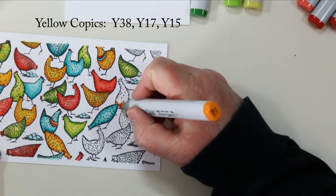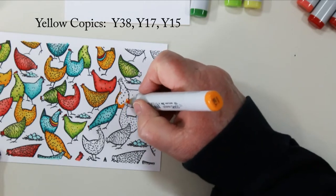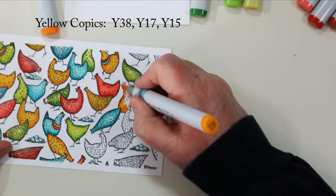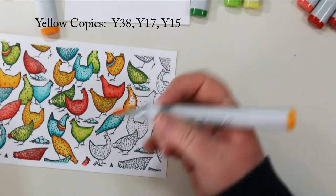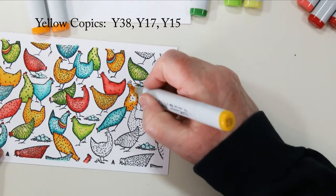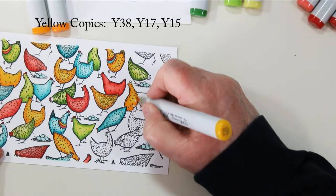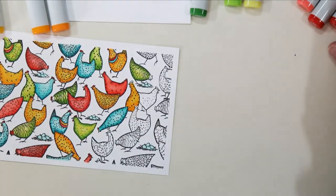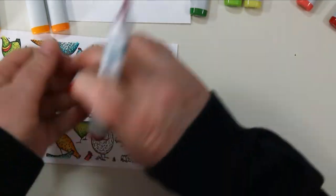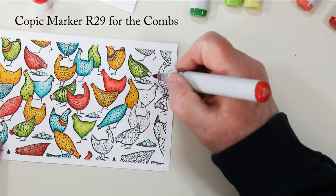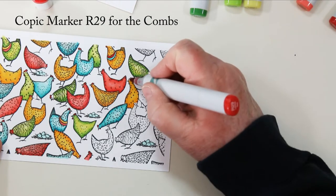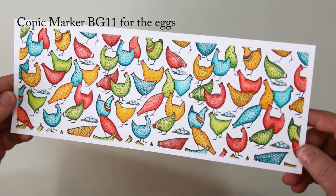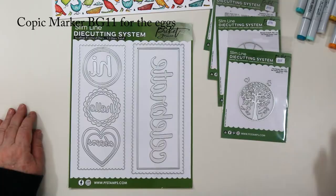Next is the yellow chicken and I'm starting with the Y38, Y17, Y15. So darkest to lightest again and adding the highlights and then blending with the lightest color. And as you can see these are quick and easy to color. I think I had a movie on while I was coloring this and just having some fun. And for the little combs at the top of the rooster's head I use the dark of the red, the R29 just to add that little bling at the top. And then for the eggs I use the BG11 from the blue portion.